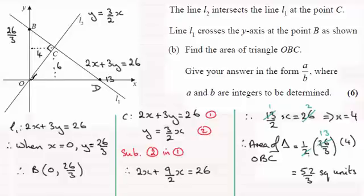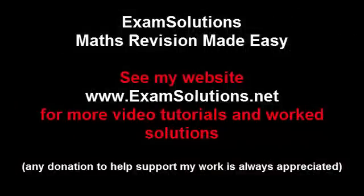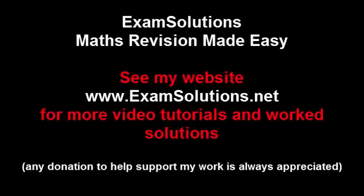Get that area, and now take away the area of the triangle OCD, which would be half the base, half of 13, times the perpendicular height of 6. You should find, by that method, you still come out to 52 over 3 square units. But of the two methods, I certainly prefer this one. Okay?